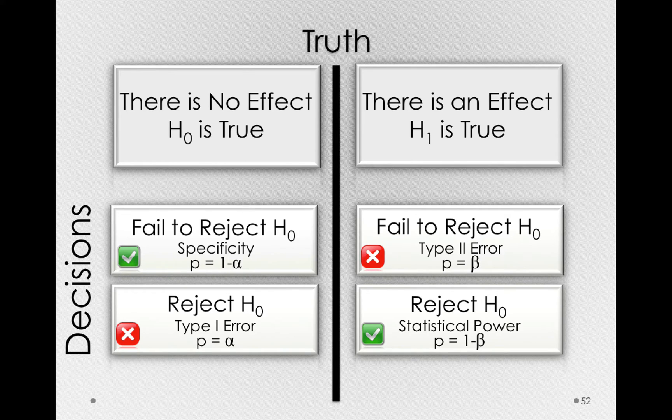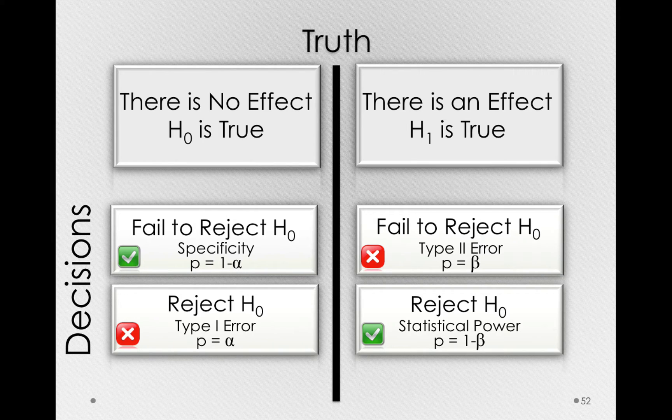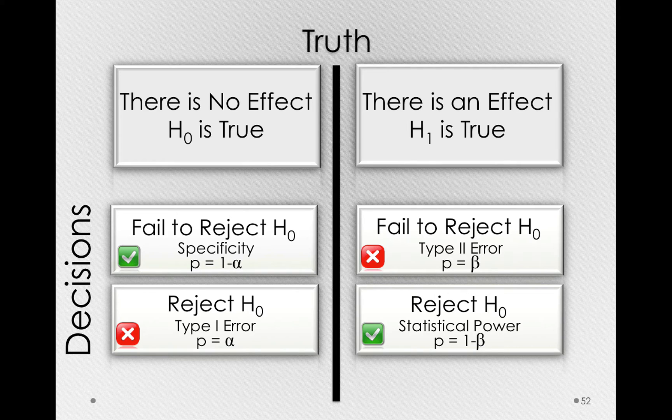Again, something has to happen if we're on that side of the world, and if the probability we will false alarm is equal to alpha, the probability we won't false alarm will be 1 minus alpha.